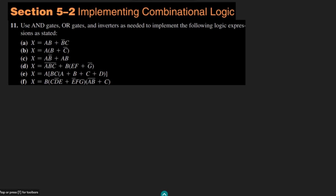Welcome back guys, this is question 11 of section 5.2, and today again we are going to talk about the implementation of combinational logic circuits. In this question we are asked to use AND gates, OR gates, and inverters, or a combination of these three gates as needed, to implement the following logic expressions.